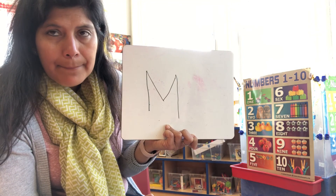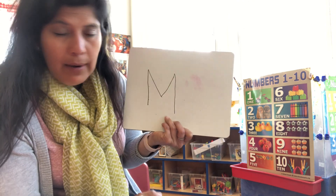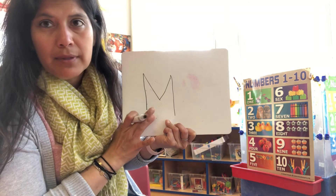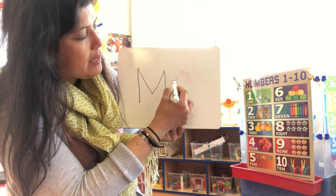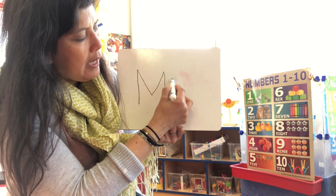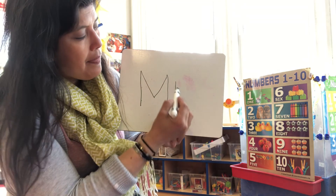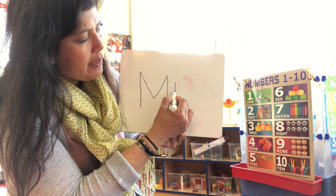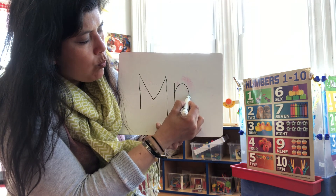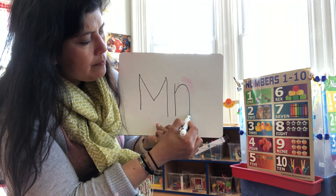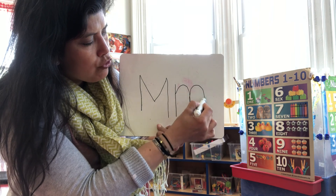Now let's make our lowercase M. We're going to do a line, then start here and go one up, and again two bumps — that's the lowercase M.